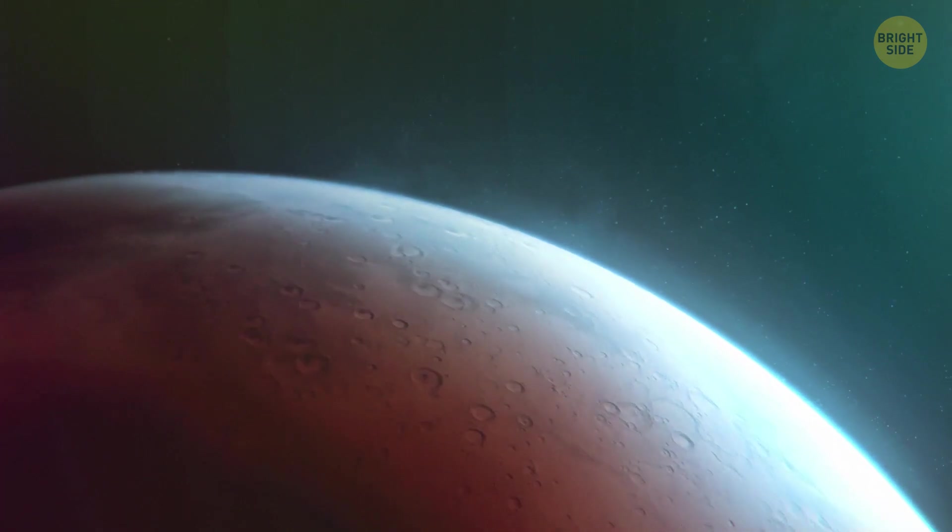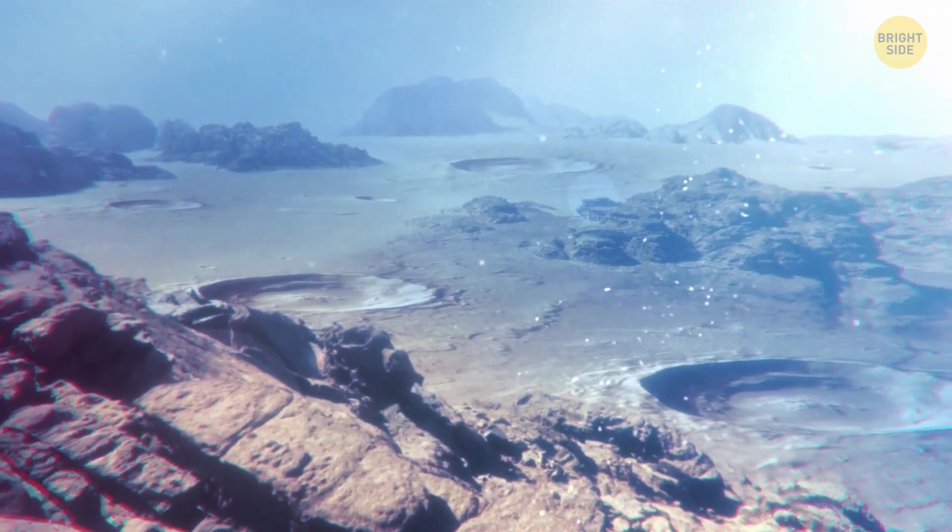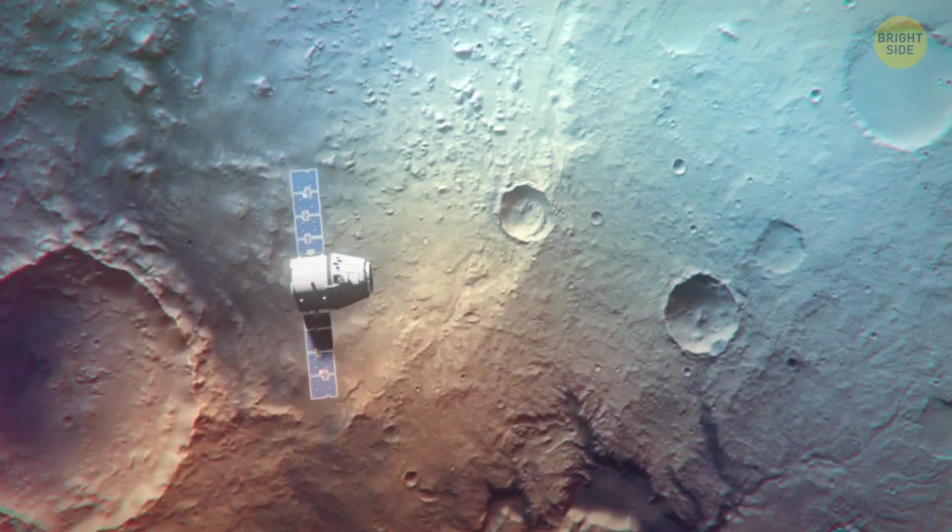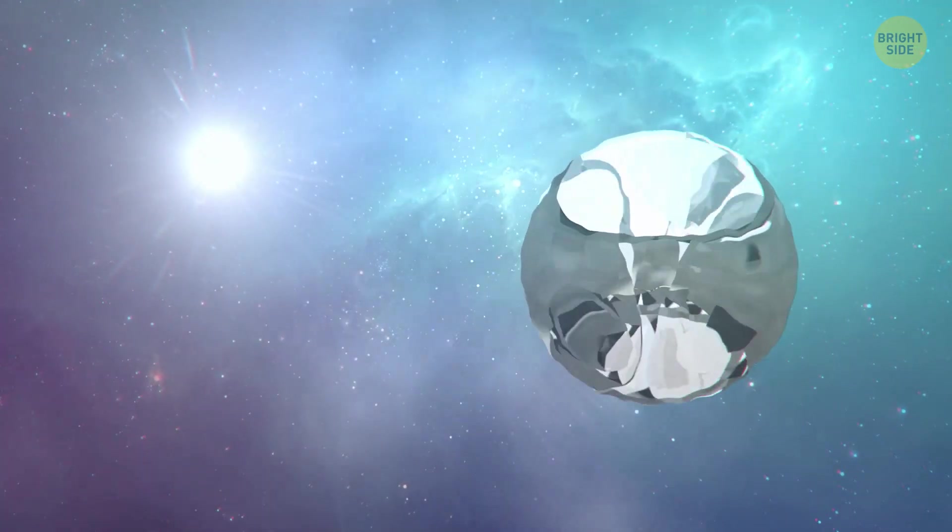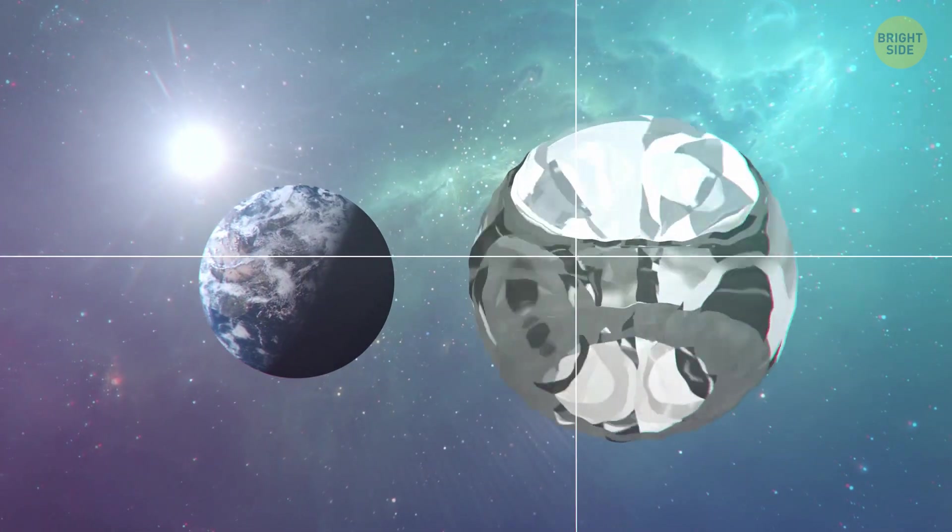Sunsets on Mars are blue. That happens because the fine dust on the red planet has the size perfect for blue light to efficiently penetrate the atmosphere of Mars. So the blue light scatters, after which it stays closer to the direction the Sun goes, unlike the light of other colors. The universe is full of wonders, and one of them is a planet made of diamonds. Yay! It's twice bigger than the Earth, and scientists believe it's mostly covered in diamond and graphite.